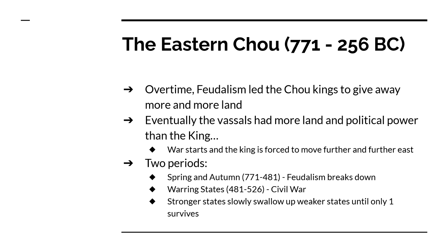There are two periods of the Eastern Zhou. One is called the Spring and Autumn Period — a period where the feudal system starts to break down and more and more states rise up against the king. Then in 481 BC the actual Warring States Period begins. From 481 BC to 256 BC, that's the Warring States Period, and basically three out of every four years are going to be filled with warfare.